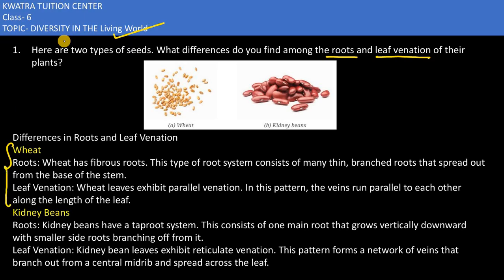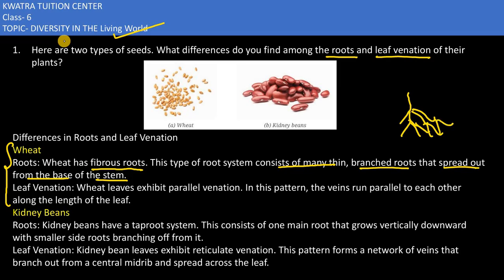According to wheat, the wheat has fibrous roots. They consist of thin branched roots that spread out from the base of the stem. Fibrous means there will be branching in their roots — roots within roots, with many branches.